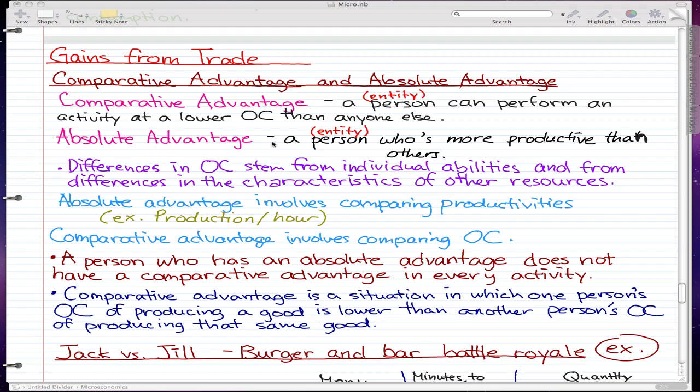Absolute advantage is where a person is more productive than others. Again, this doesn't have to be a person—it can also be a business, a country, or some sort of entity.